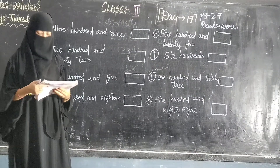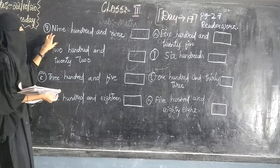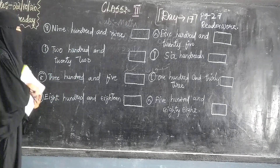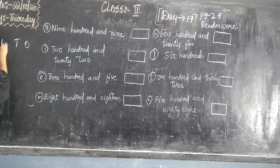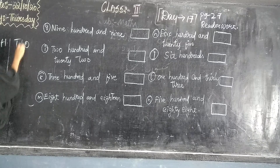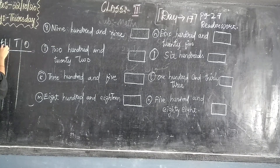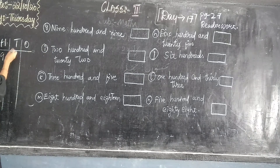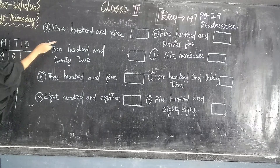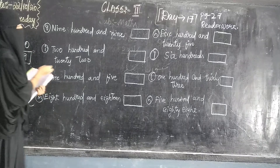Now take out question number 27. So G: 909. First we will write the place value here — 1, 10, 100. 900, then 0, then write 9. So what we get is the answer: 909.